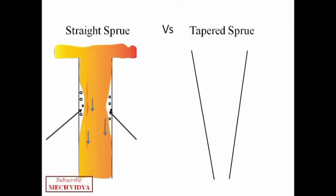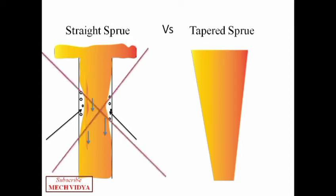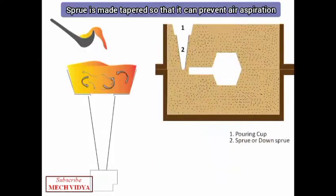On the other hand, in case of a tapered sprue, when the molten metal flows through it, the molten metal remains stuck to the inner walls while flowing, so no chance of air aspiration is there. This is why we don't use straight sprue. So now we have a tapered sprue to reduce the aspiration.